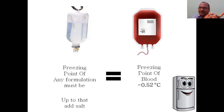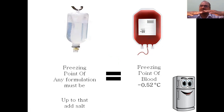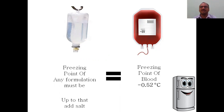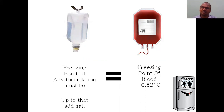Freezing point means where the liquid blood converts into solid — it becomes frozen. The freezing point of blood is minus 0.52 degrees centigrade — fix this in your mind. The freezing point of water is zero degrees centigrade. If you are given a formulation to adjust for isotonicity, you check the freezing point — it will definitely be more than minus 0.52.